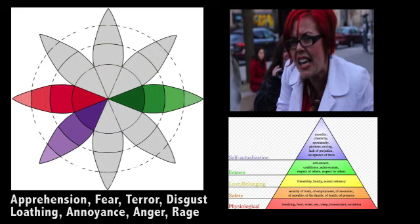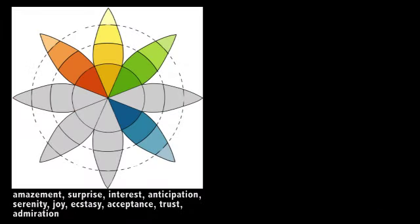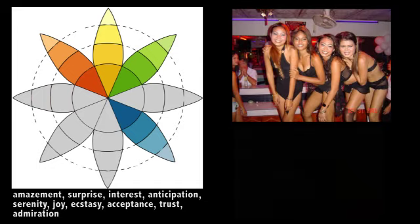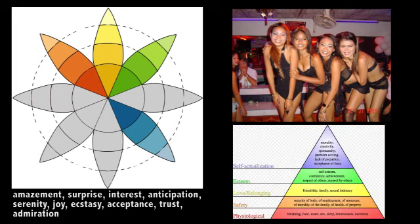The bottom line is that the Western women and feminists in general, the emotions that they elicit in men including loathing, disgust, annoyance, anger and rage lead us to feel contempt for them whilst the positive emotions that the Thai bar girls elicit in us including ecstasy, joy, serenity, admiration, trust and acceptance lead us to feel love for them.